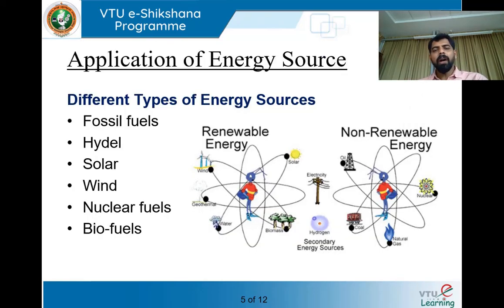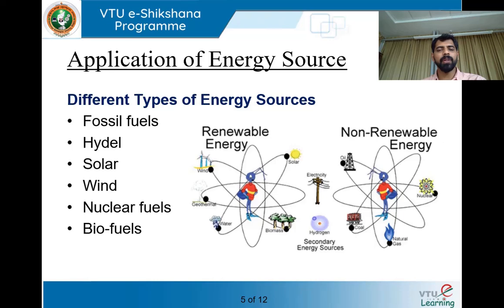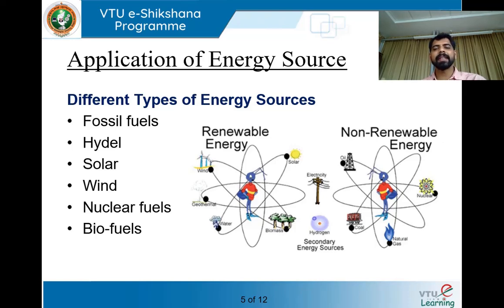Whether it is renewable or non-renewable, in most applications the final output is the secondary energy source — that is electricity. If you want light in your house, you need electricity. If you want to switch on an AC or a fan, you need electricity. In the present generation, we make use of the secondary energy source, which is electricity. That means whether it is renewable or non-renewable, everything needs to be finally converted into secondary energy — electrical energy.